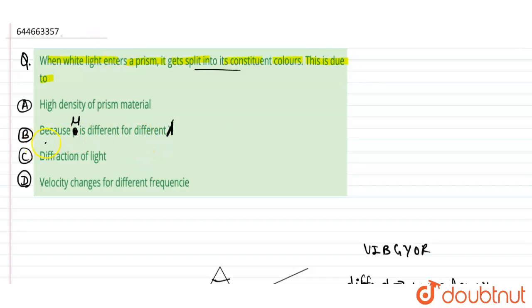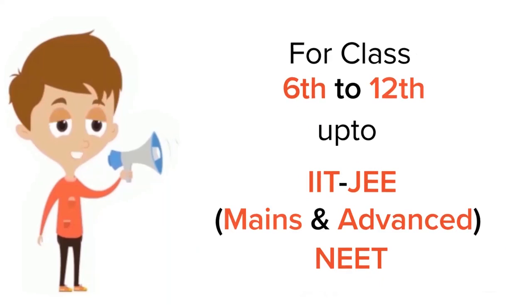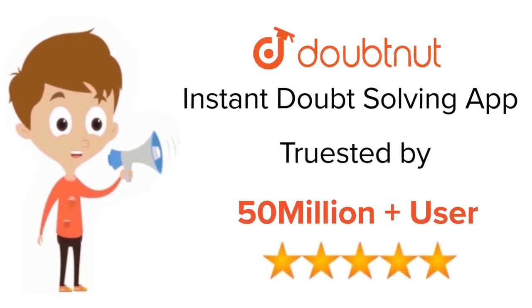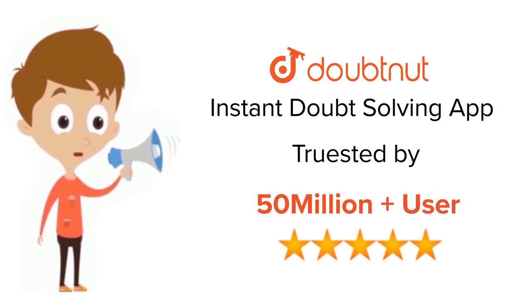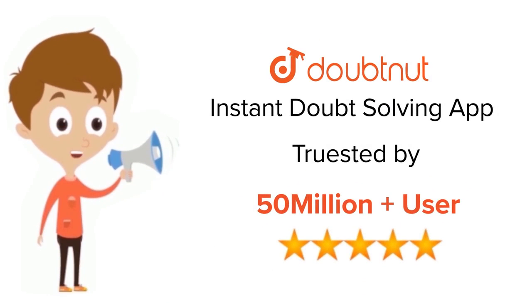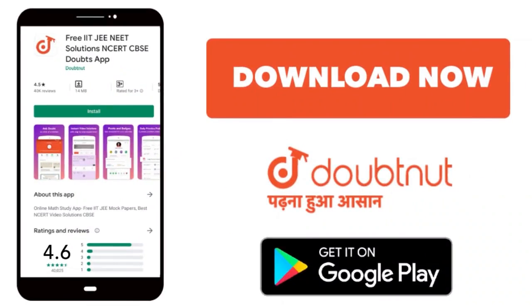Option B is correct, because mu is different for different lambda. This is the right answer to this question. Thank you. For class 6 to 12th, IIT JEE, and NEET level — trusted by more than 5 crore students — download the DoubtNet app today.